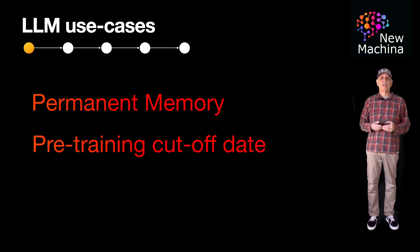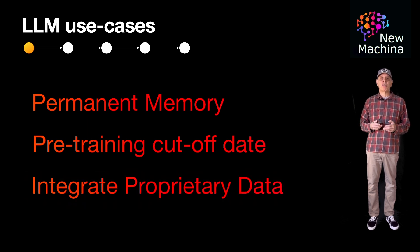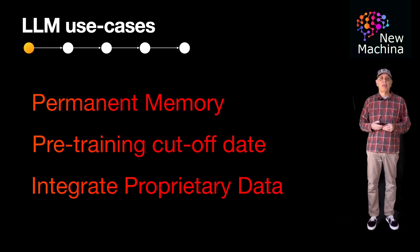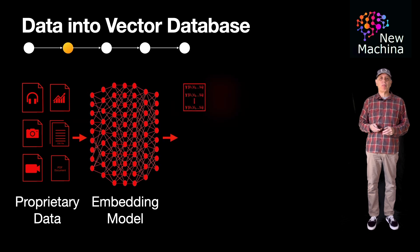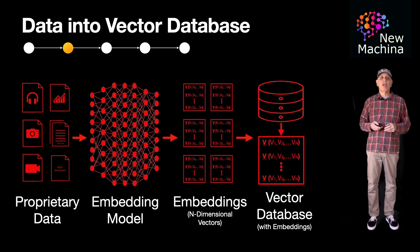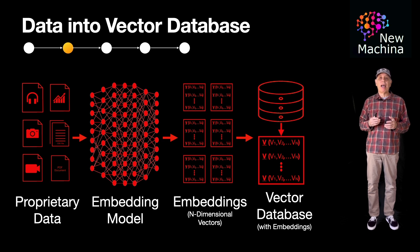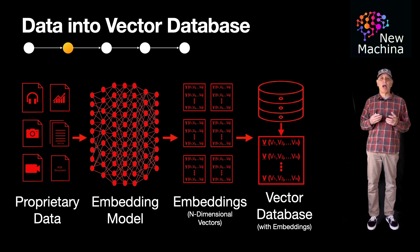The last use case is integrating your organization's proprietary data into an LLM-driven system. This is also known as RAG, or Retrieval Augmented Generation. To integrate proprietary data, you first need to take all your proprietary documents, create embeddings, and then insert these embeddings into a vector database.